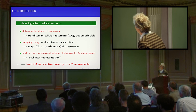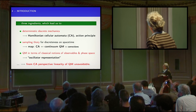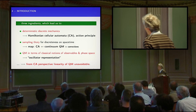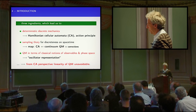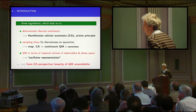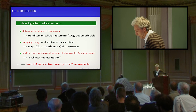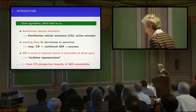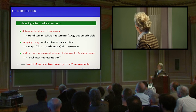What I get from these three ideas — which is the program of today — is a certain class of cellular automata which, for obvious reason, I will call Hamiltonian cellular automata. I will give you an action principle for this, which is the central part of my talk. Then I will use sampling theory to construct a map from the cellular automata onto continuum quantum mechanics plus some corrections. From the cellular automata perspective, if you are in this class of cellular automata, the linearity of quantum mechanics and the superposition principle is practically unavoidable.